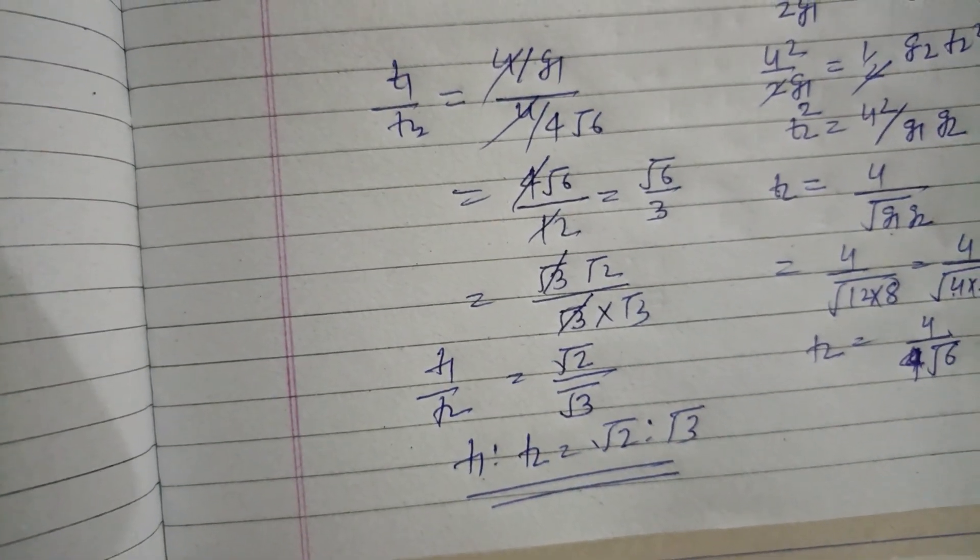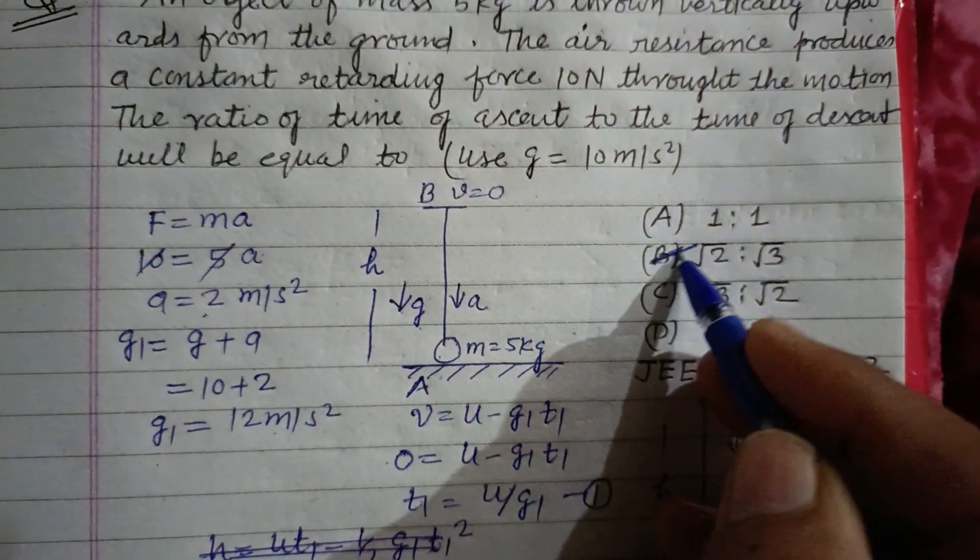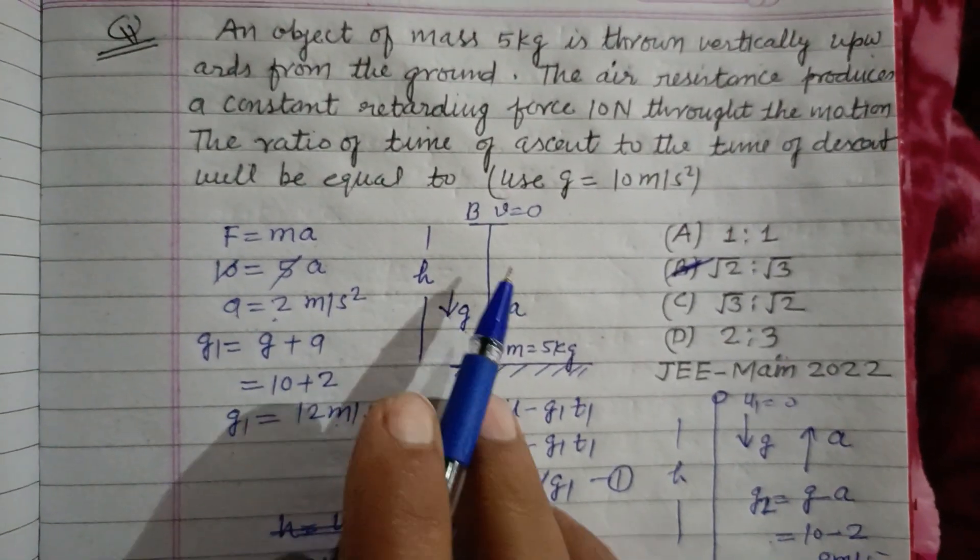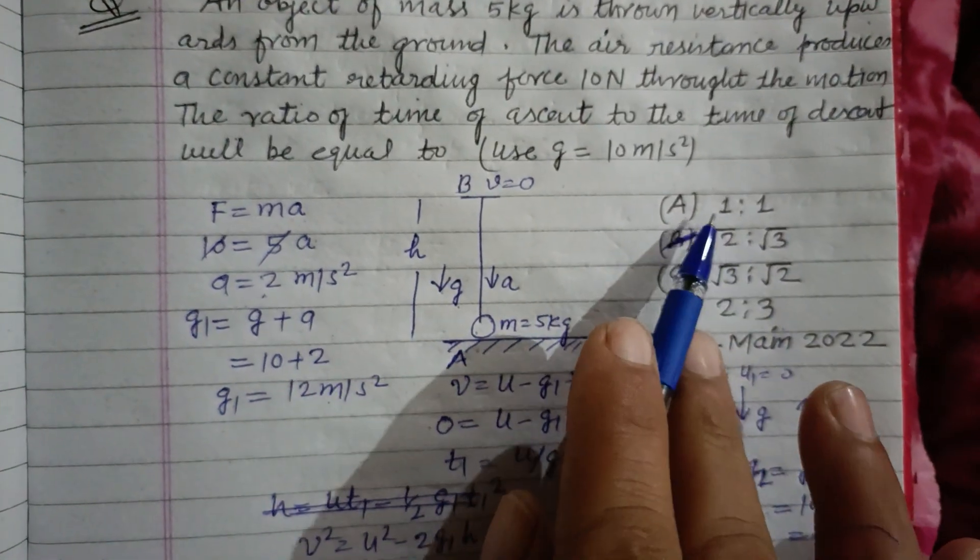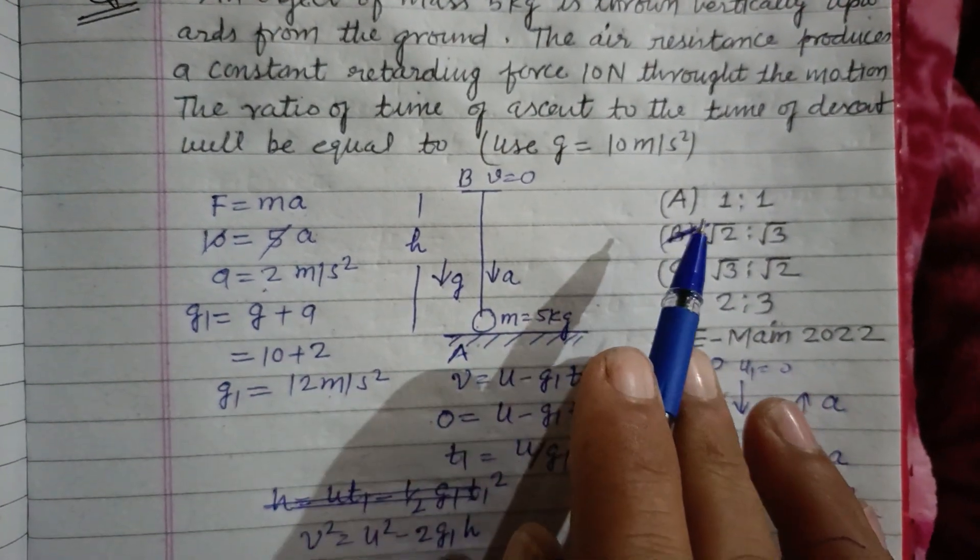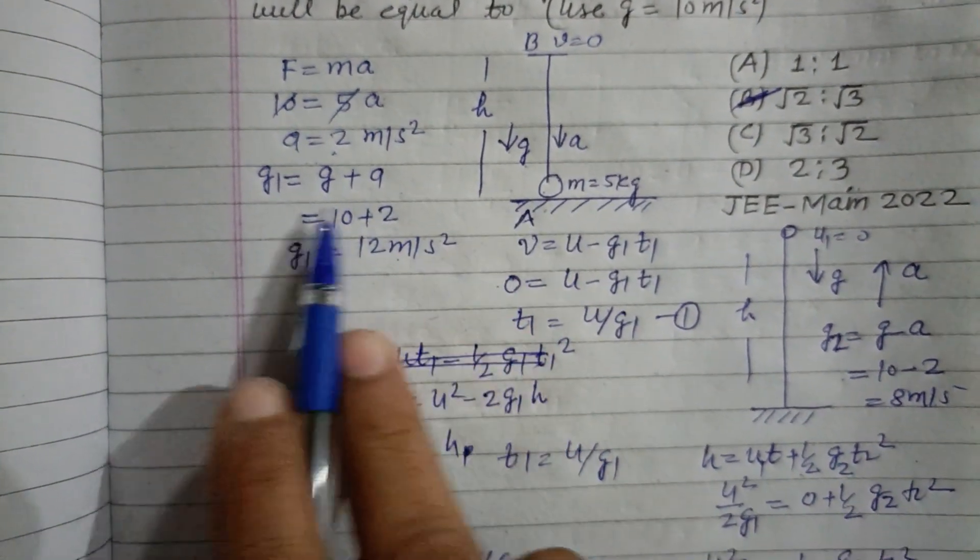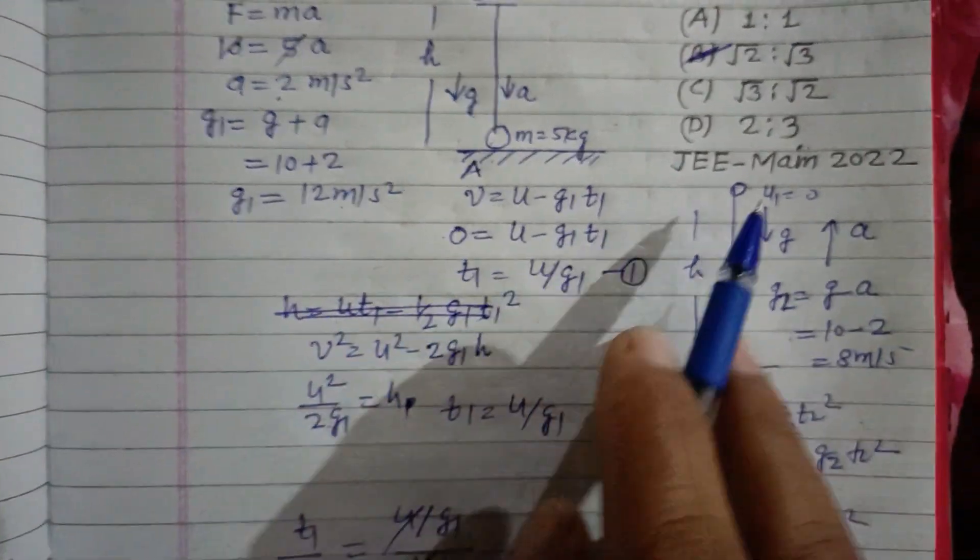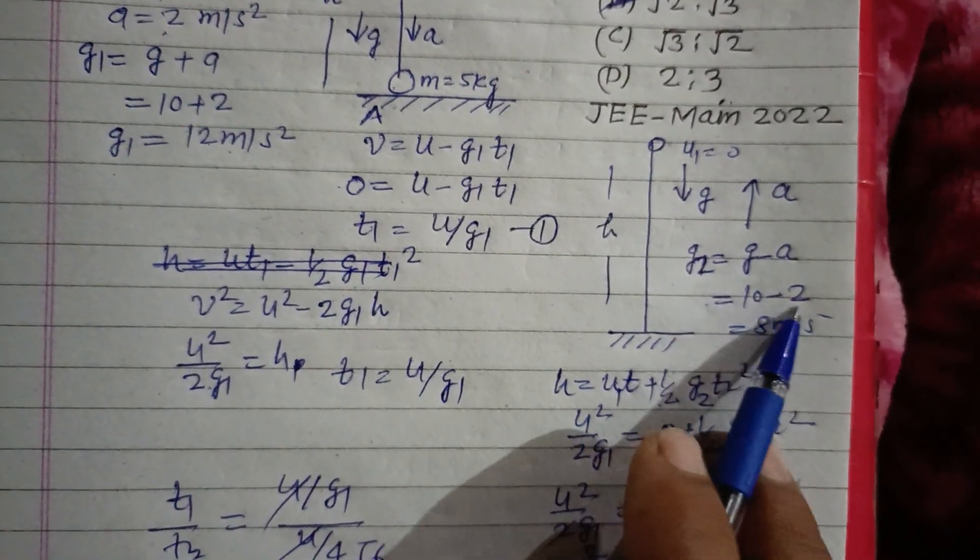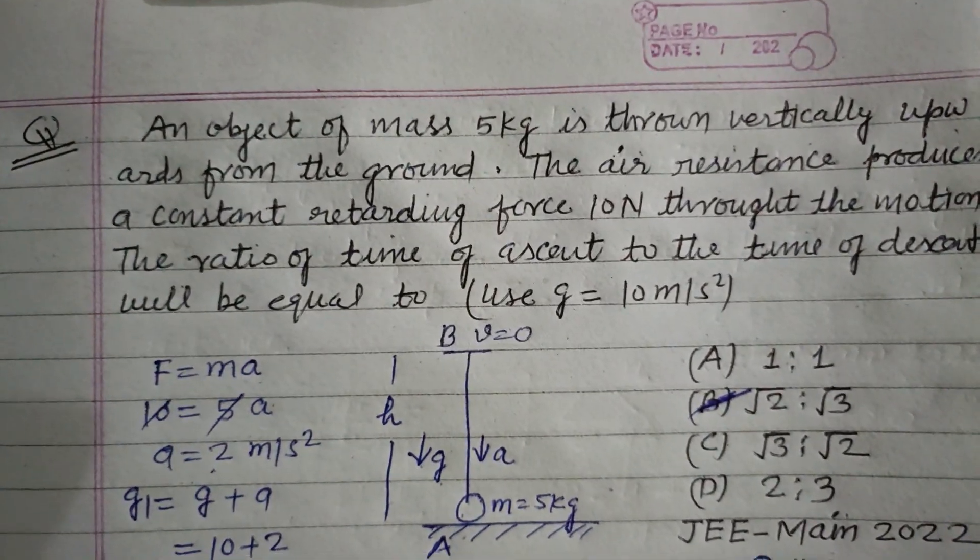So this is the time of ascent to time of descent, so answer is B. B is the correct answer of this question. Students, if there is no resistance, then time of ascent and time of descent is same, then option A is correct. Considering air resistance, we have taken different acceleration g1 which is 12 meters per second squared, and on descending g2 is 10 minus 2, which is 8 meters per second squared. So I hope you got it. Please like the video, subscribe the channel. Thanks for watching.